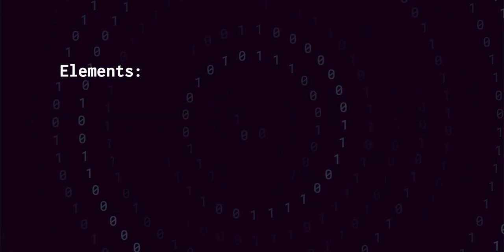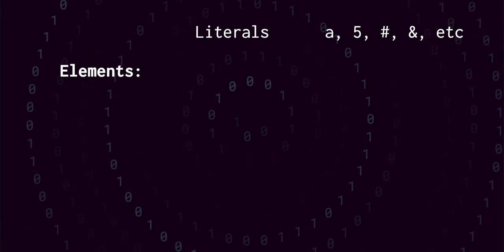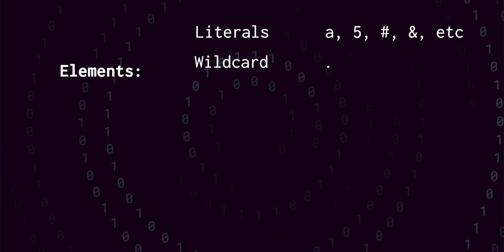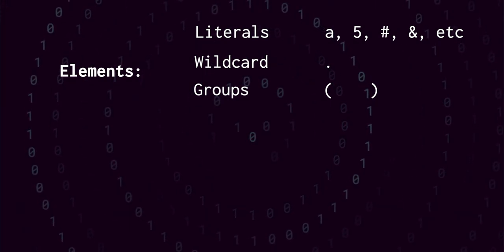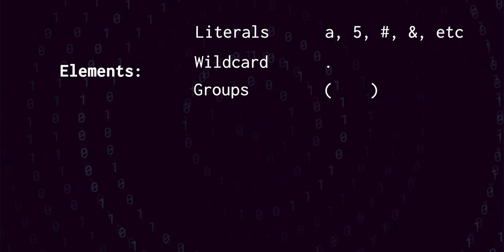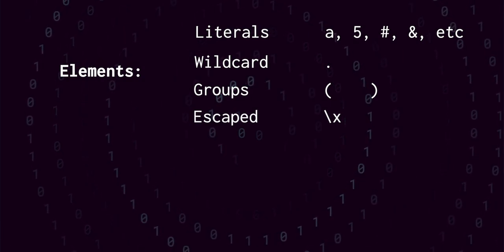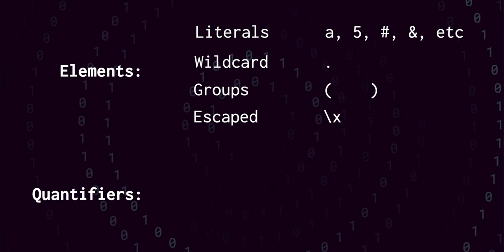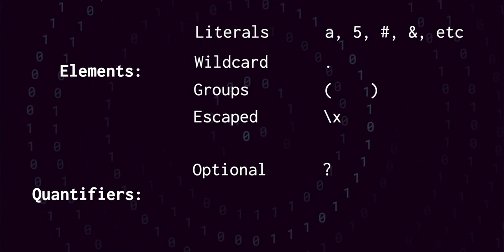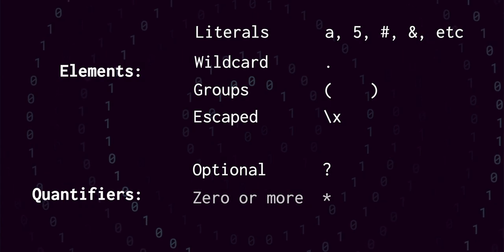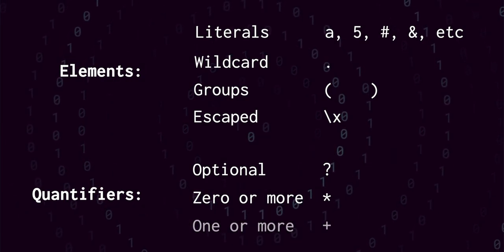In our regular expressions, we can specify elements like literals that can be specified with alphanumeric characters and symbols that don't have any special meaning, the dot character which represents a wildcard, and we can use parentheses to create groups of elements that are treated as a single element in the regular expression. If we need to catch a symbol with a special meaning but as a literal, it can be escaped with a backslash. Then we have three quantifiers that can specify how many of each element should be captured. The question mark can be placed after any element and tells the regular expression engine that matching this element is optional.